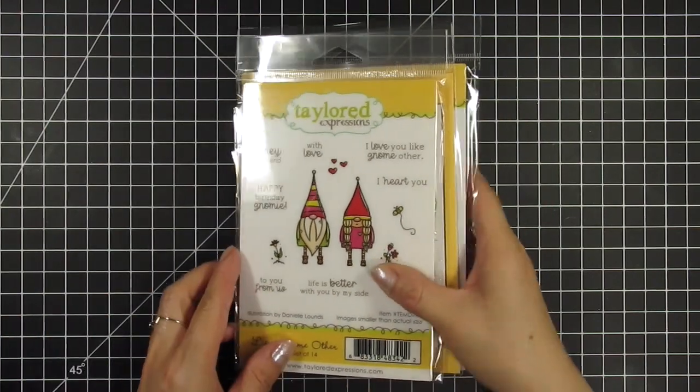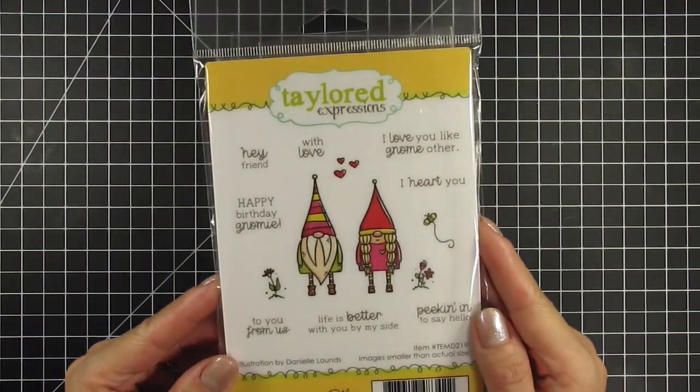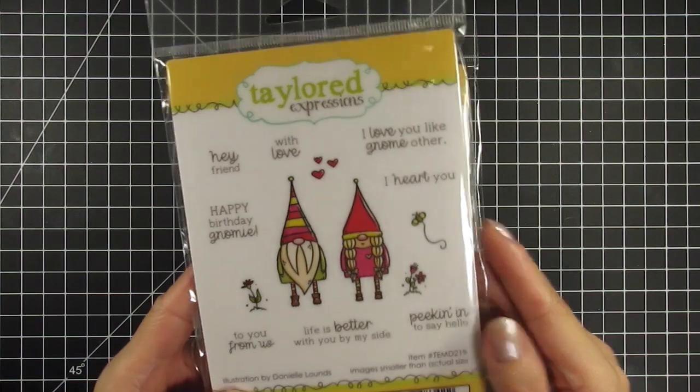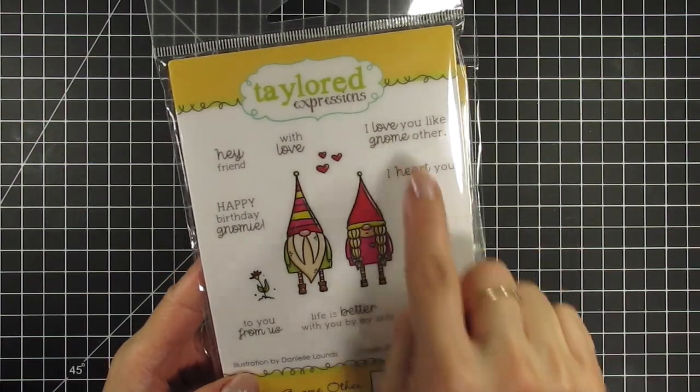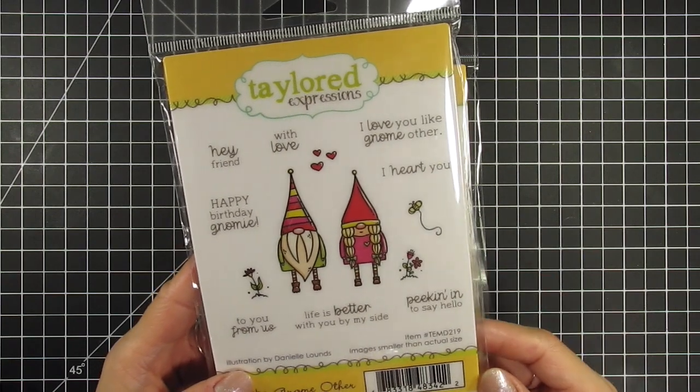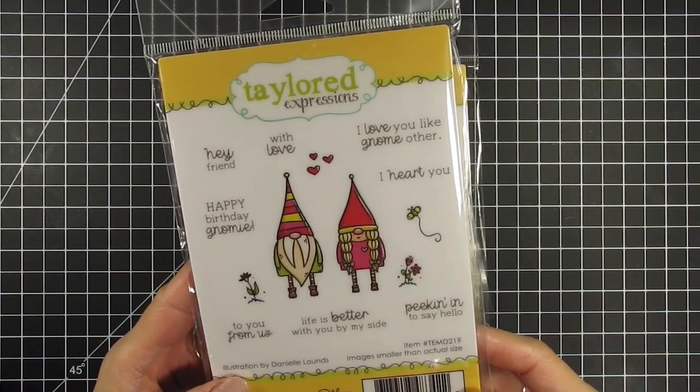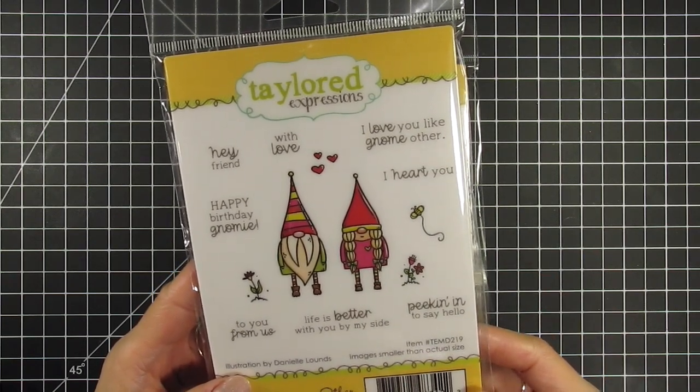The first ingredient is the Like Gnome Other stamp set. There's a gnome couple and additional images which include hearts, two types of flowers, and a bee. There are eight sentiments which cover a wide range of occasions including hello, birthday, love, anniversary, and friendship.